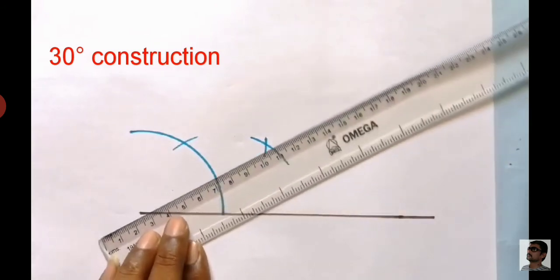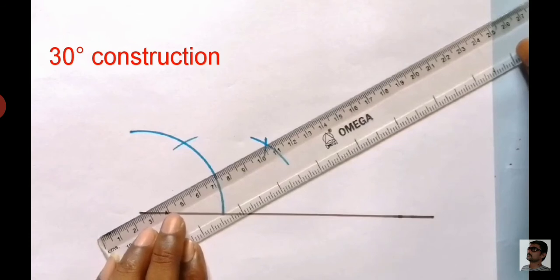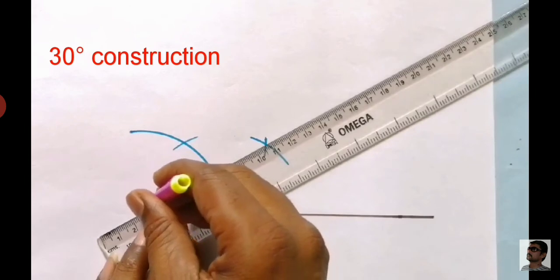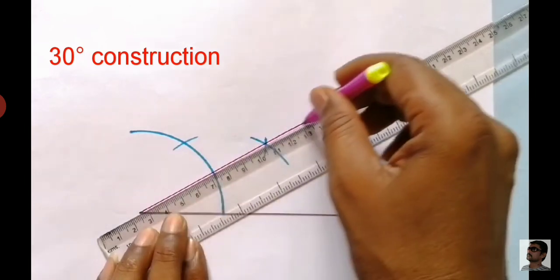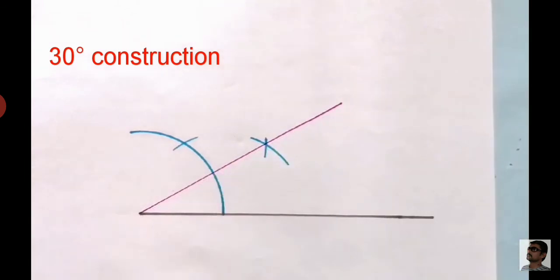As we know that 30 degrees is the bisection of a 60-degree angle, we bisect the 60-degree angle and are able to get a 30-degree angle.